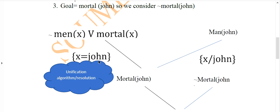Here X is replaced by John — that technique is known as the unification algorithm. Because X replaces John, negation man(X) converts to negation man(John). And man(John) is already present, so man(John) and negation man(John) eliminate each other, giving us mortal(John). Then mortal(John) and negation mortal(John) — as per the negation of the goal node — also eliminate each other, and we get phi. So our resolution technique is solved.